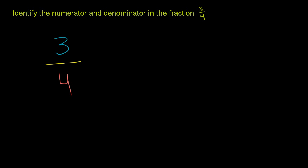They want us to identify the numerator and the denominator. The numerator is just the number on top - the 3 right there. And the denominator is just the number on the bottom - it's the 4.